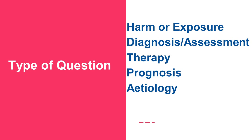Fifth is finding the causal effect — Etiology. For example, finding whether a patient with smoking habits will develop tuberculosis, or taking tuberculosis patients and finding whether they have smoking or tobacco chewing habits, saying tobacco or smoking is the main etiology for tuberculosis. Your research question will most probably fall into any of these five categories: Harm/Exposure, Diagnostic/Assessment, Therapy, Prognosis, or Etiology.